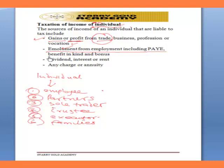Benefits-in-kind and bonuses — I've already mentioned those as part of emolument. When we get to personal income tax computation, we get to see the beauty of items like benefits-in-kind, how they are computed, and how the tax of an individual is being computed.